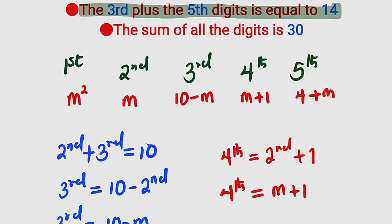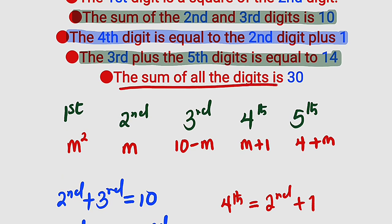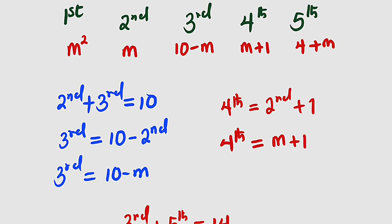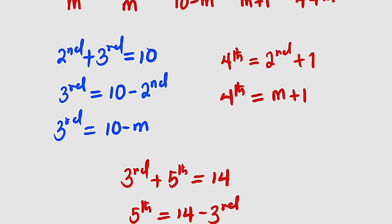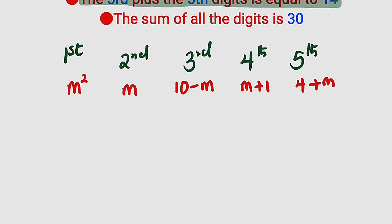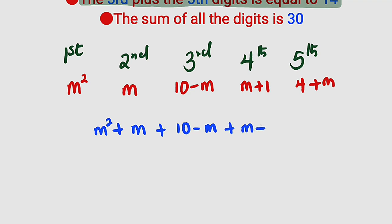Now we have all five digits expressed in terms of m: m squared, m, (10 minus m), (m plus 1), and (4 plus m). The last statement says the sum of all five digits equals 30. So: m squared plus m plus (10 minus m) plus (m plus 1) plus (4 plus m) equals 30.